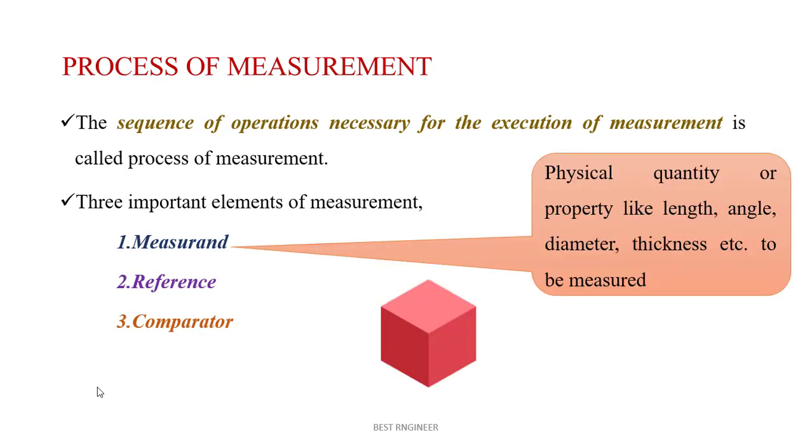Measurand is the physical quantity or property like length, angle, diameter, thickness, what we are going to measure. That is called measurand. See this picture. Length, breadth, height we are going to measure. These all are measurands.